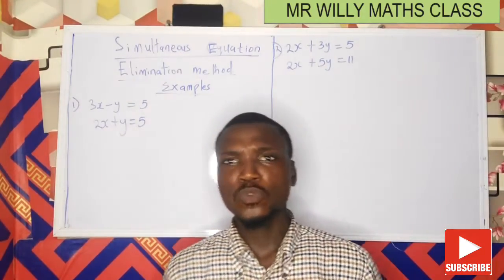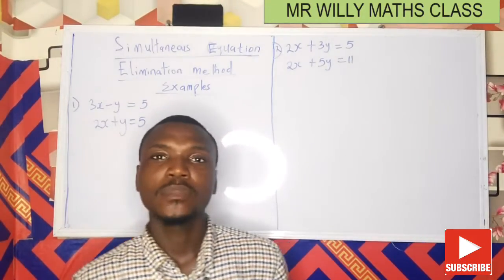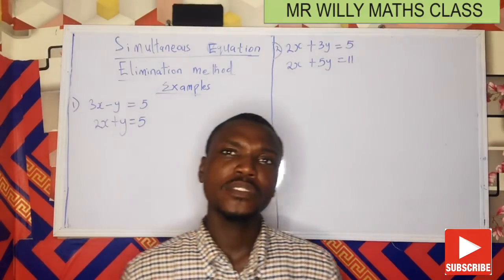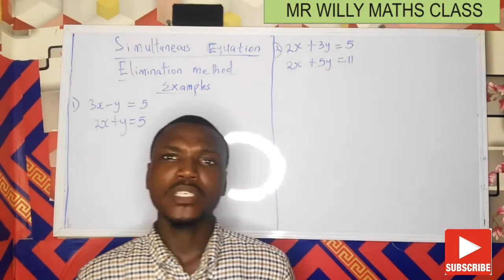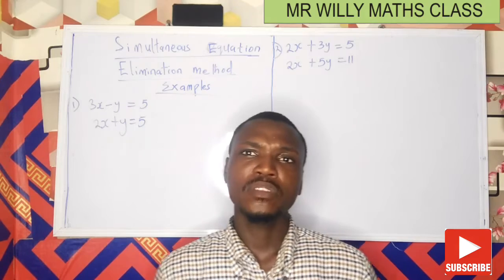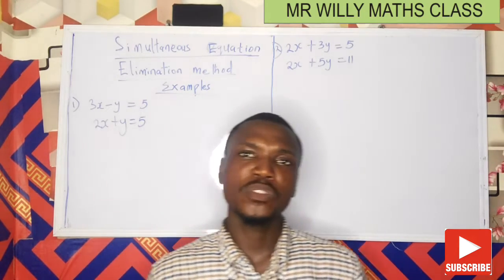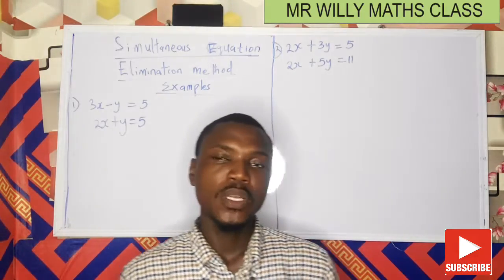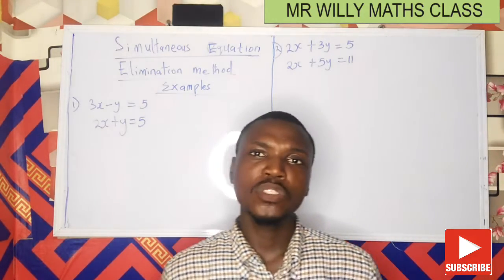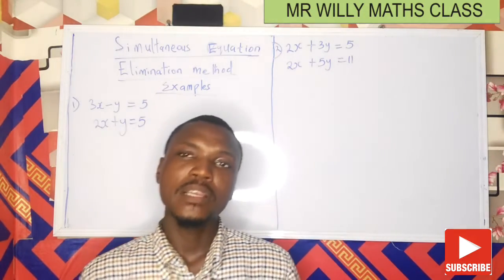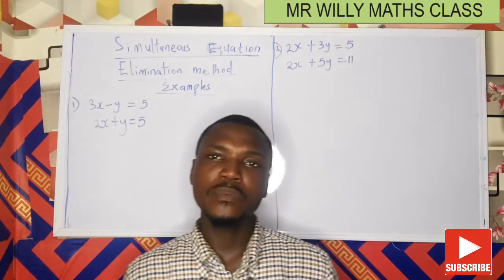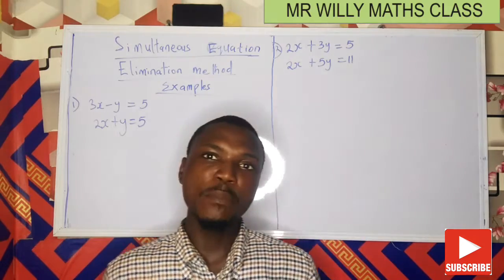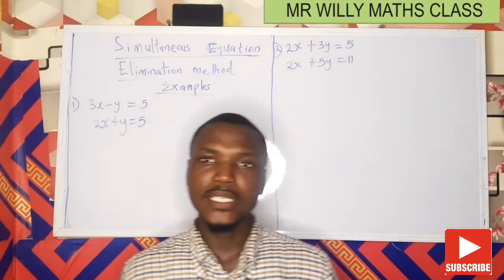Hello there, welcome to today's class — welcome to Mr. Willy's Smart Class. We'll be solving simultaneous equations. Simultaneous equations are two or more equations with two or more unknowns. The reason they're called simultaneous equations is that you solve for the variables simultaneously, that is, together. We'll be using the elimination method for today's class.